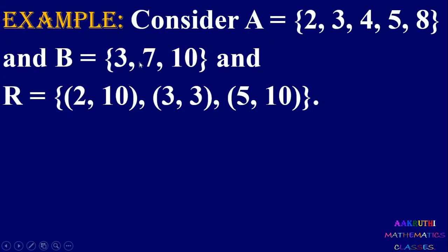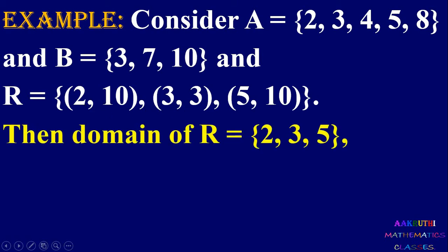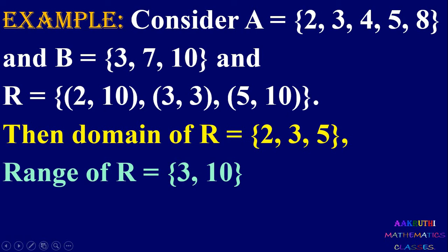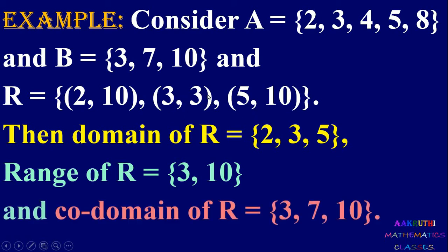Consider an example: A = {2, 3, 4, 5, 8} and B = {3, 7, 10}, and relation R = {(2,10), (3,3), (5,10)}. Here 2 is a divisor of 10, 3 is a divisor of 3, and 5 is also a divisor of 10. Domain is set of all first elements: {2, 3, 5}. Second elements give range: {10, 3} = {3, 10}. Co-domain is the full second set: {3, 7, 10}.